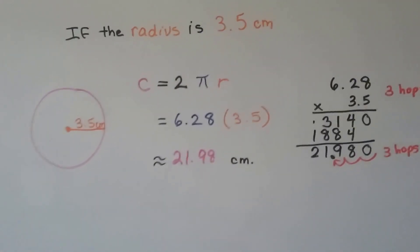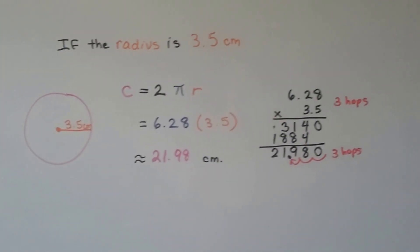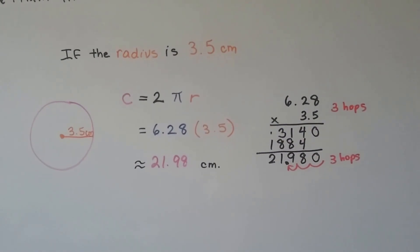Because that was 3.5 centimeters. It's really important to label what it is so people know if it's inches, centimeters, yards, meters, miles, or even liquid measures, ounces. You want to label them.